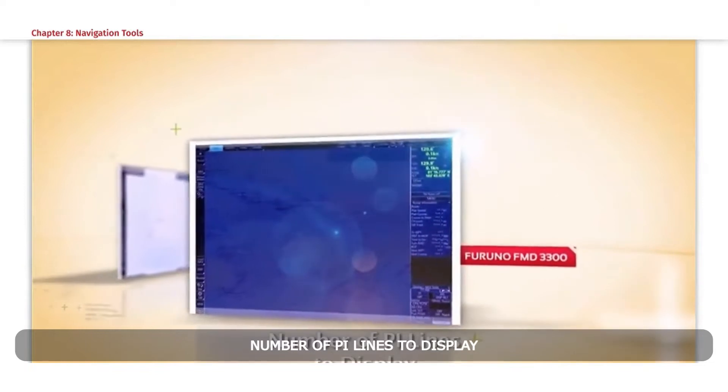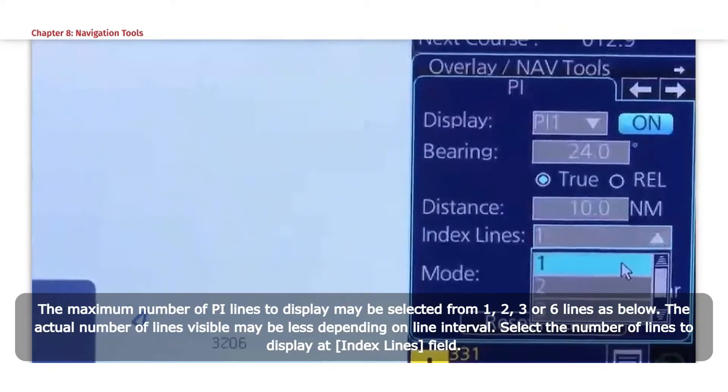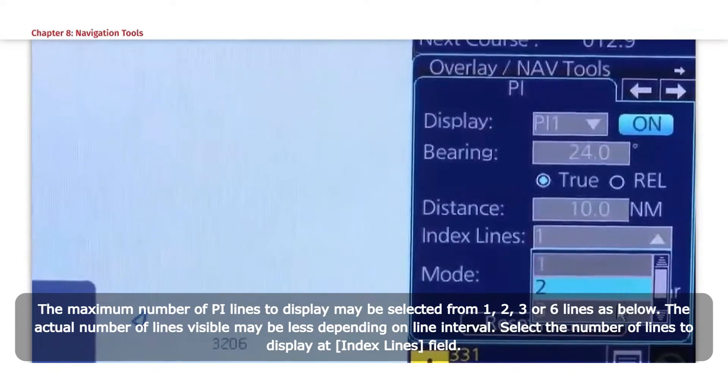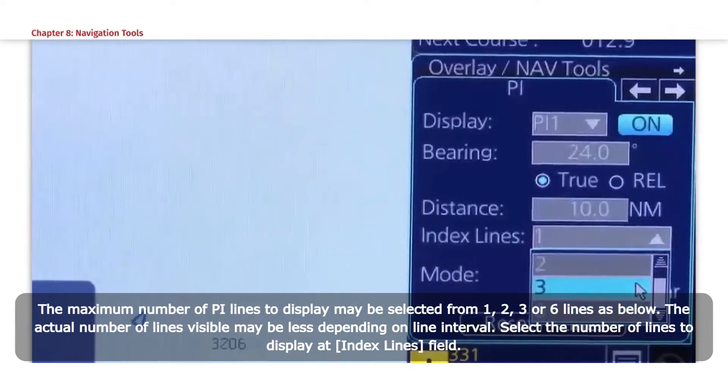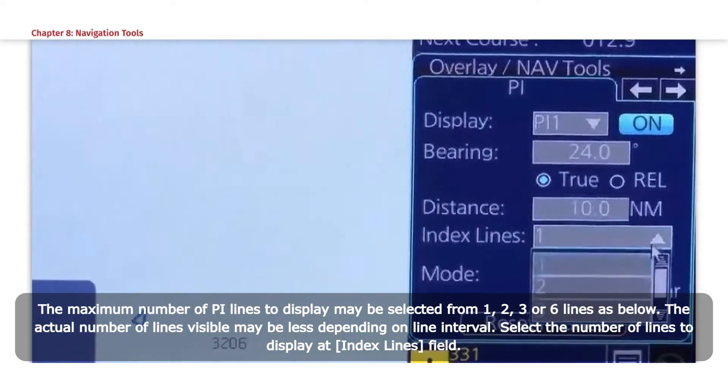Number of PI Lines to Display: The maximum number of PI Lines to display may be selected from 1, 2, 3, or 6 lines. The actual number of lines visible may be less depending on line interval. Select the number of lines to display at Index Lines field.